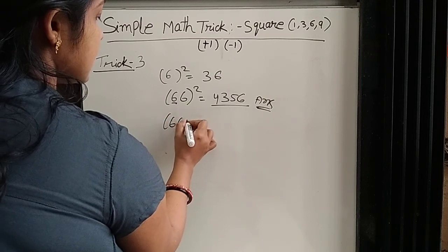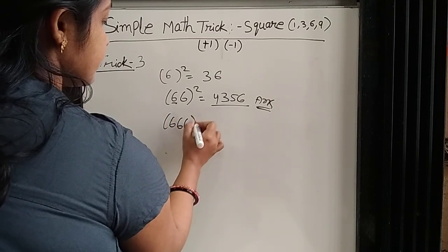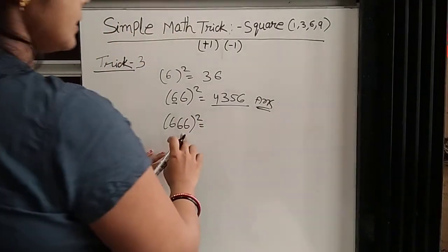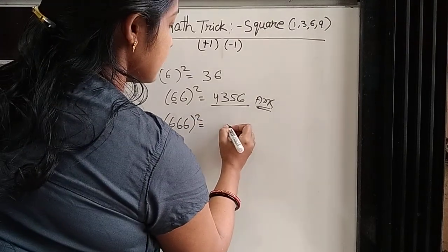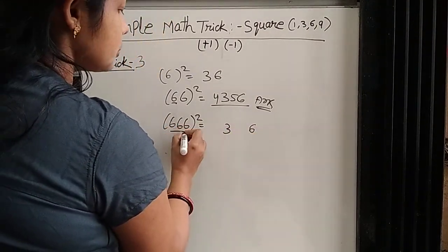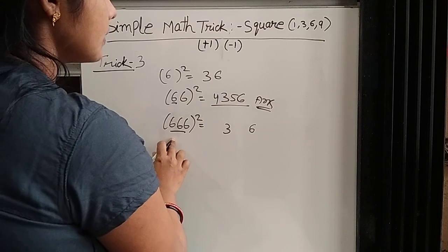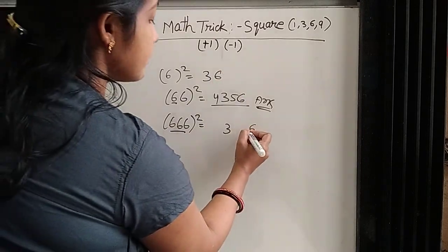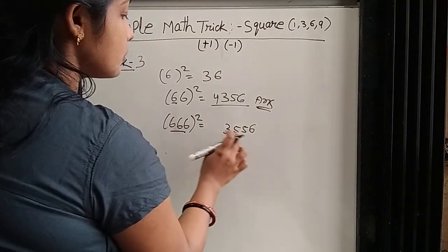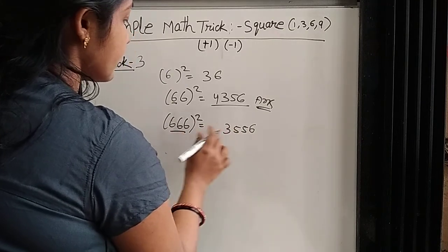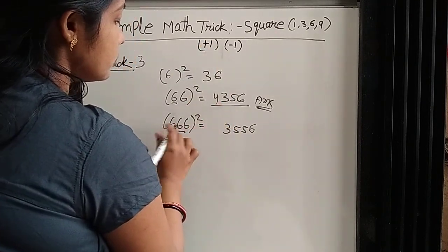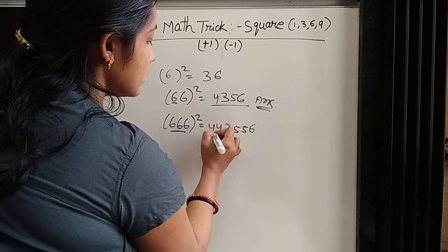Suppose this is 3 6: same, 6 square is 36, and the rest are two 6s. So 6 minus 1 is 5 — for 2 6, we write 25. And 3 plus 1 is 4 — for 2 6, we write 24 here.